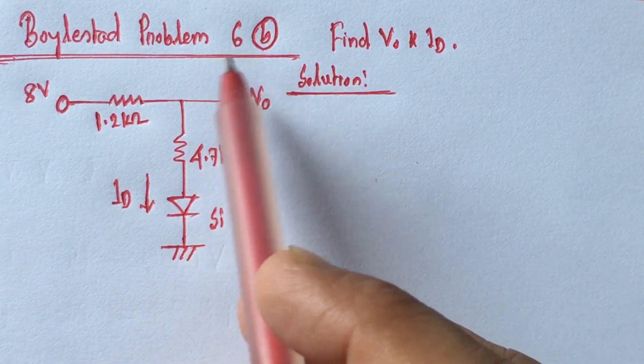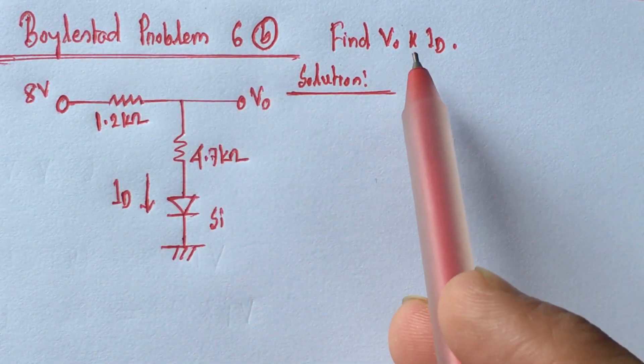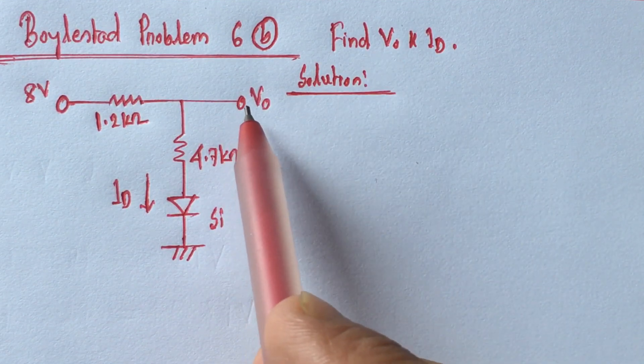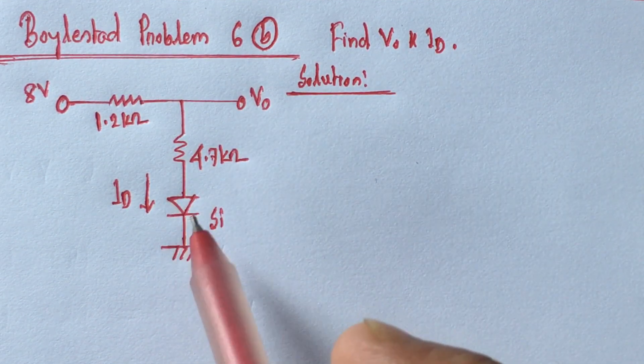Hi viewers, today we will solve problem 6B from Boyle State. Here we have to identify the voltage V0 at this point and the current ID flowing through the diode.